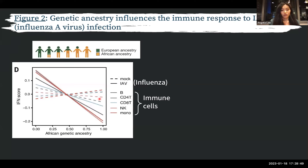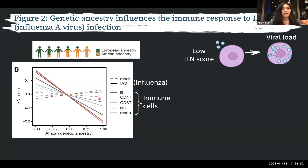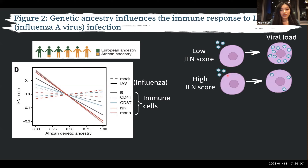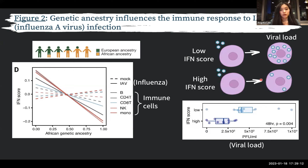The next question was whether interferon score correlates with viral load. It is well known that interferons are important for controlling viral infection. If you have a low interferon score, you'd expect a high viral load, and vice versa. The authors measured viral load using a plaque assay, counting plaque-forming units. As expected, a low interferon score corresponded to higher amounts of virus, and a high interferon score corresponded to lower amounts.